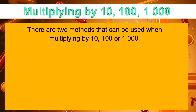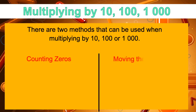Let's look at these patterns. There are two methods that can be used when multiplying by 10, 100, or 1,000: the Counting Zeros Method, or the Method of Moving the Decimal. Let's begin with the Counting Zeros Method.